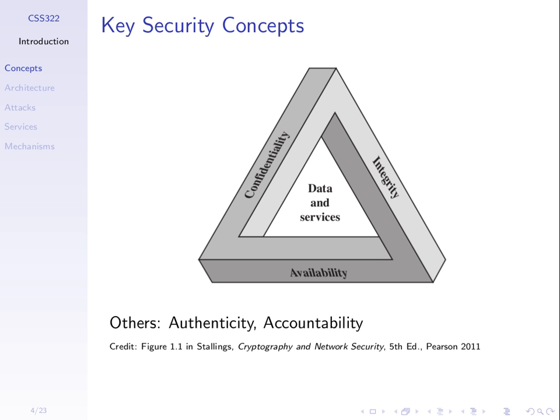The first definition mentioned three things: confidentiality, integrity, and availability — the CIA triad, as some people refer to it. These are the most important objectives in securing a system. Confidentiality means keeping things secret. If I send information from one computer to another and it is authorized only for that other computer, I don't want someone to intercept and read it across the network.